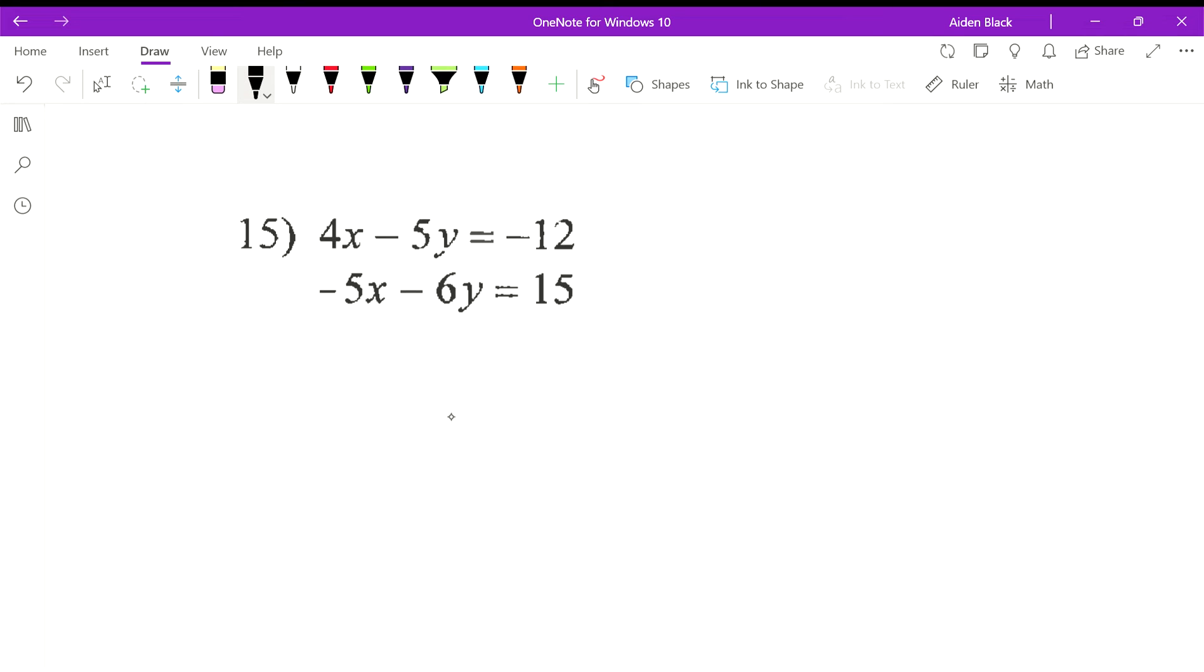When you have numbers like this, we can't just double this one equation and end up with the same coefficient between these two. But one thing we can do which might make it easier is to add or subtract equations from each other in the first place. So it looks like if we add these, let's try it out: 4x minus 5x would be negative x, negative 5y plus negative 6y is negative 11y.